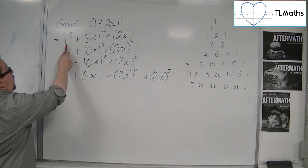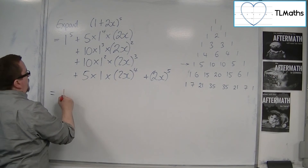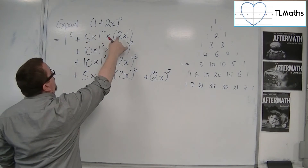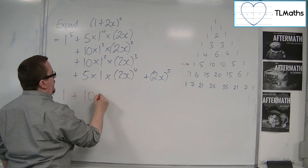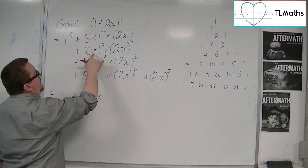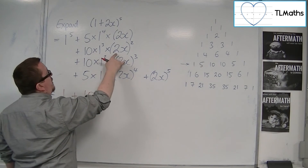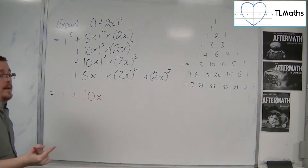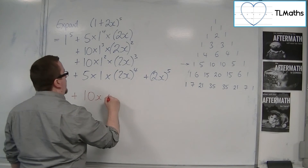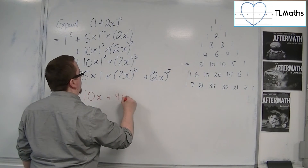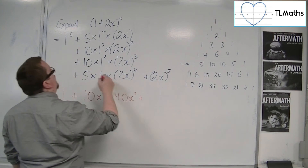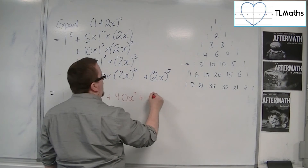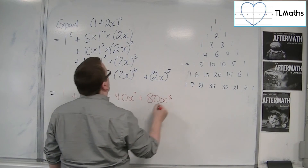So we have 1, plus 5 times 1 times 2, so 10x. Then we've got 10 times 1 times 4 — because the 2 is also getting squared — so 10 times 4 is 40x squared. Then we've got 10 times 1 times 8, so 80x cubed.